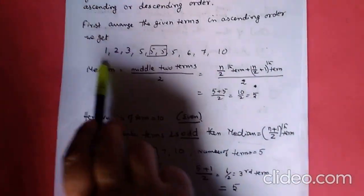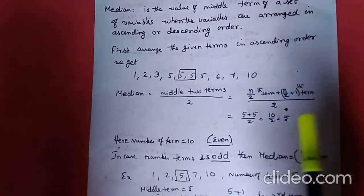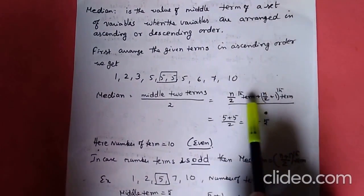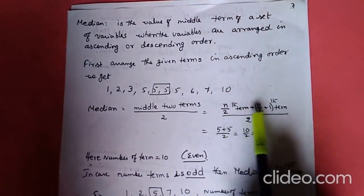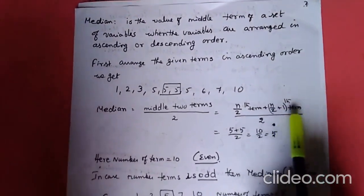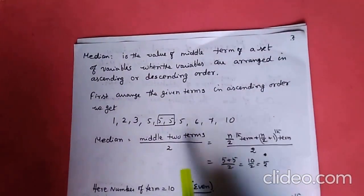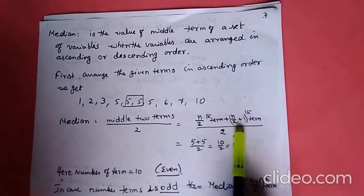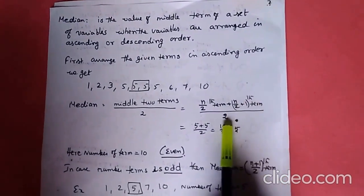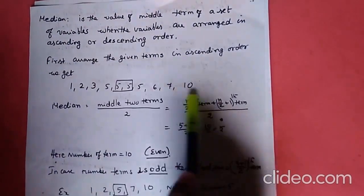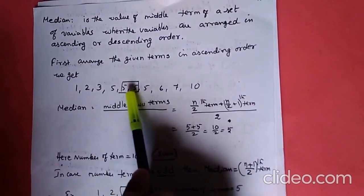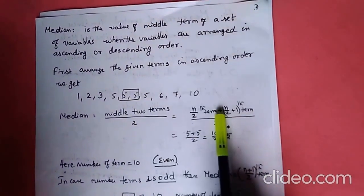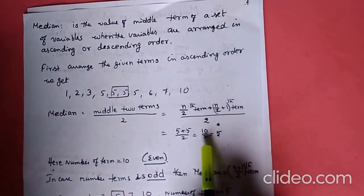Here the number of terms is 10. Since it is even, the formula is the average of the (n/2)th term plus the (n/2 + 1)th term. So n/2 means 10/2 = 5th term, and the next term is the 6th term. You add the 5th and 6th terms and divide by 2 to get the median.